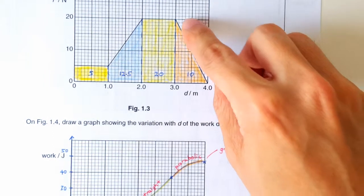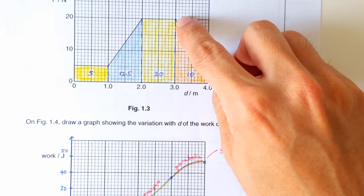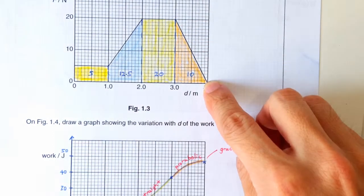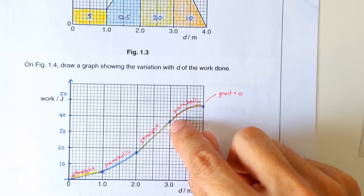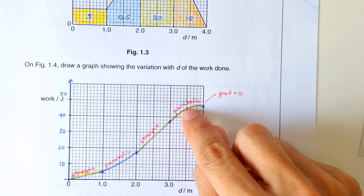The opposite happens here. So you are doing work at a slower and slower rate as the force decreases. So the curve you draw here should show a gradient that becomes flatter and flatter.